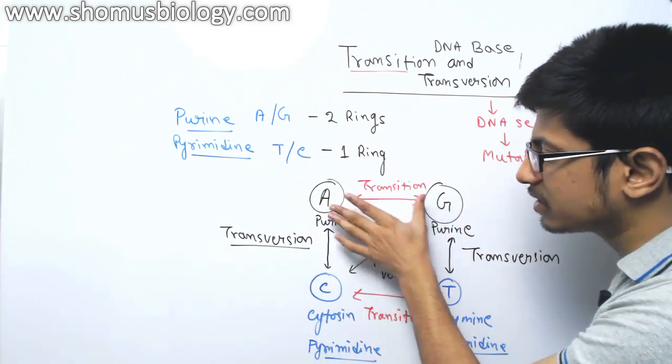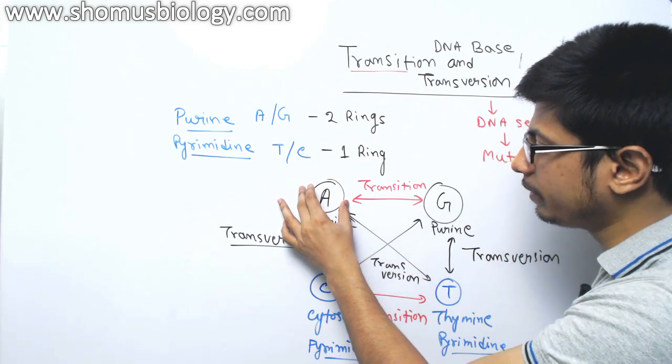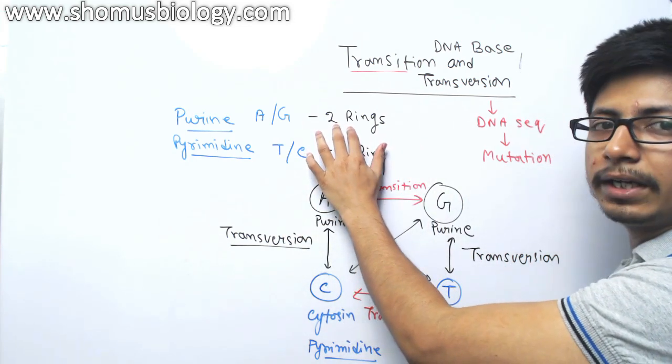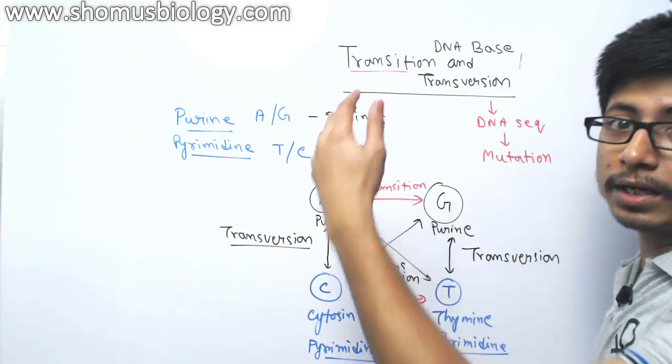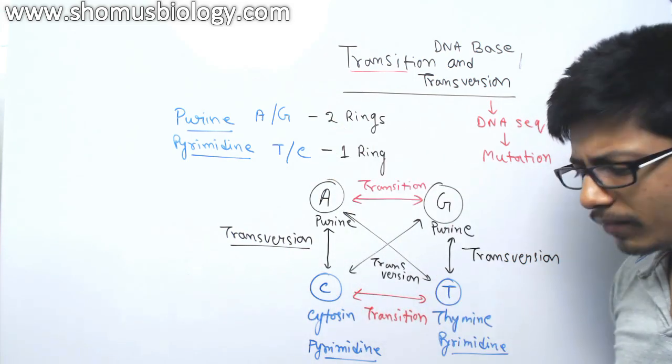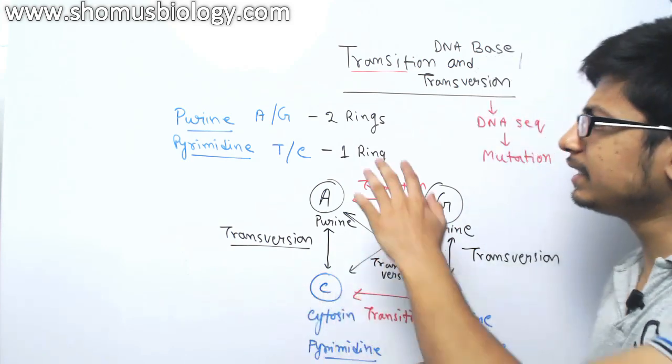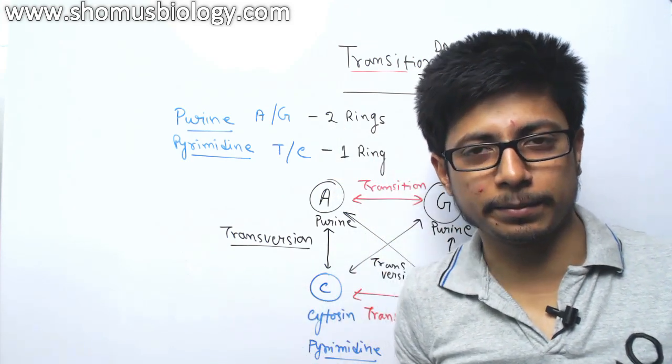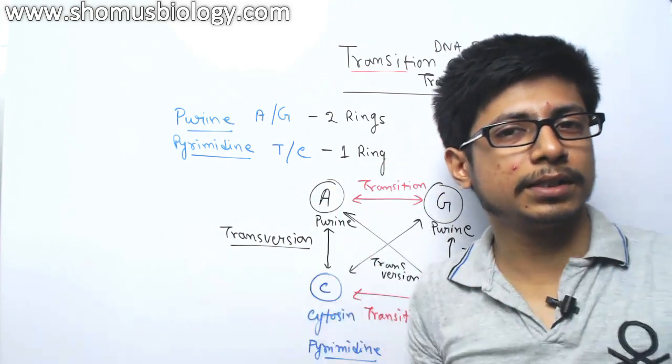Now remember one thing: in transition, a purine base substitutes another purine base. So two ring base substituting another two ring base. So that is the change, and in that case, it will not lead to that much of change in the DNA because a double ring substitutes another double ring.